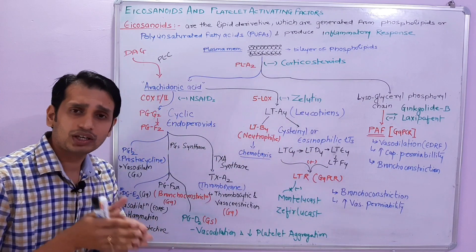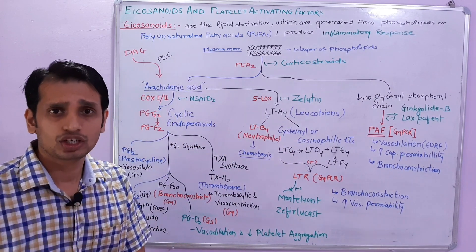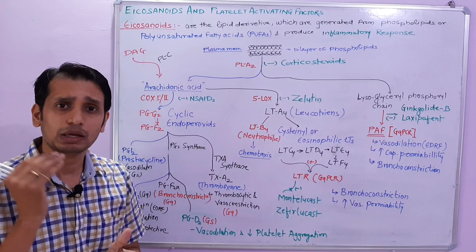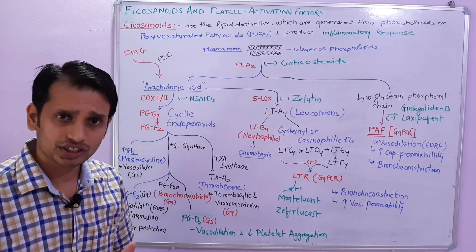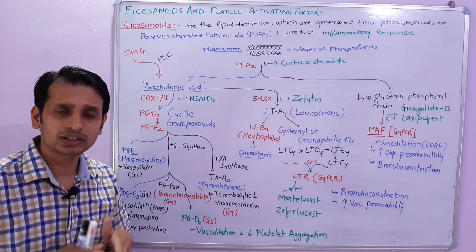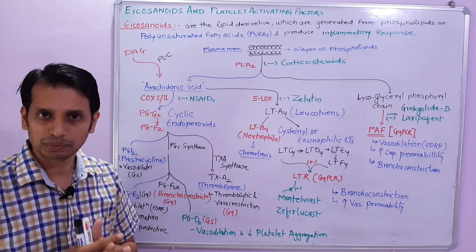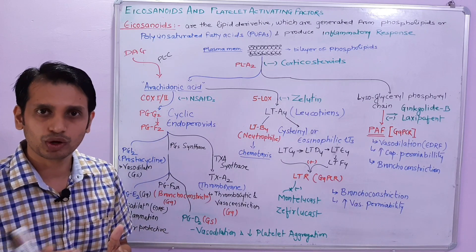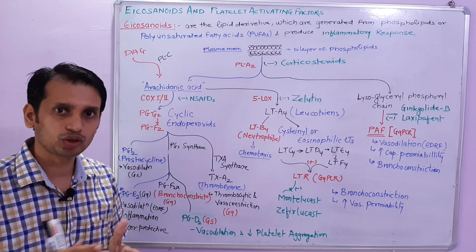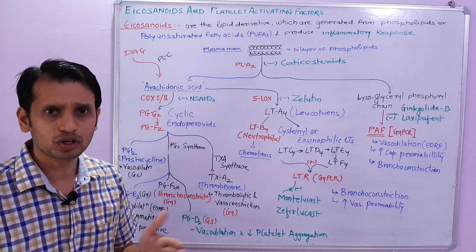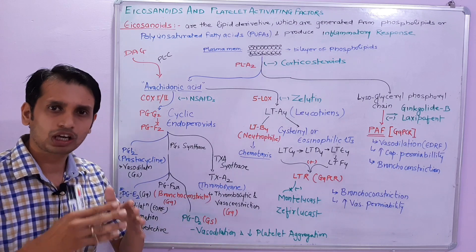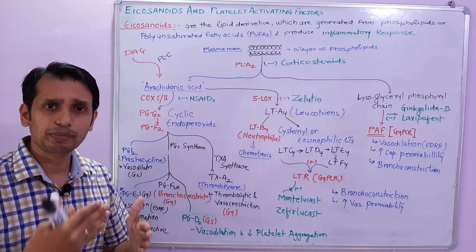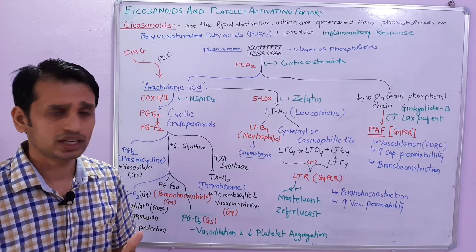Basically, what are the Eicosanoids? Eicosanoids are the lipid derivative autocoids. We know that autocoids are three types: one is the amine derivative, one is the peptide derivative, and one is the lipid derivative. So basically the Eicosanoids are the lipid derivative autocoids.